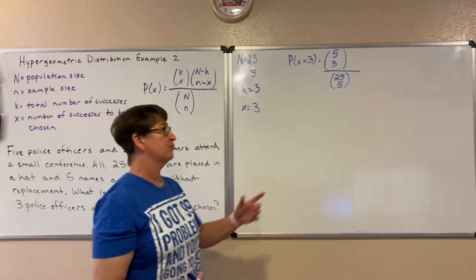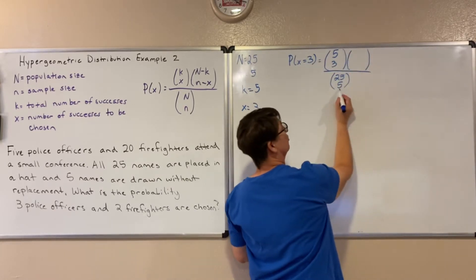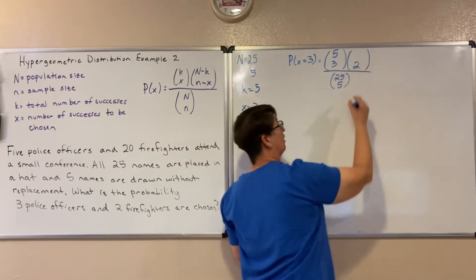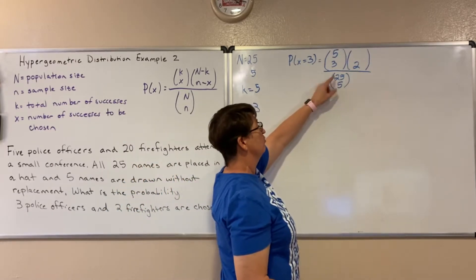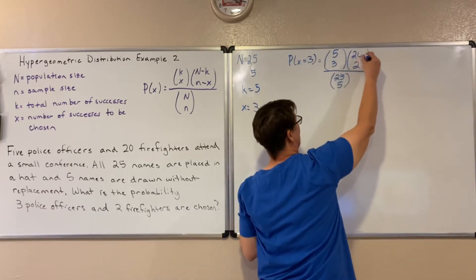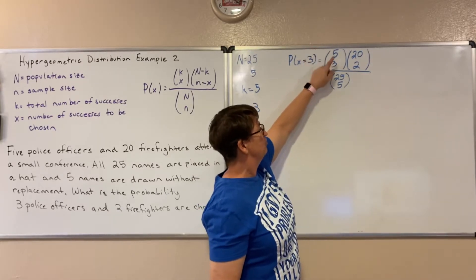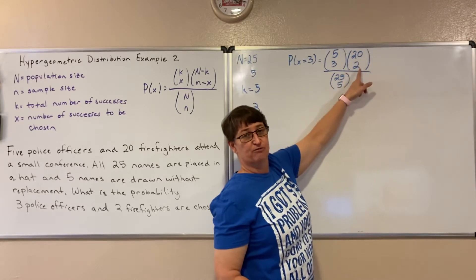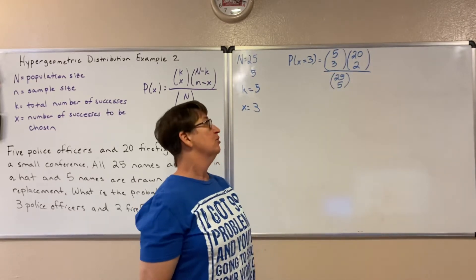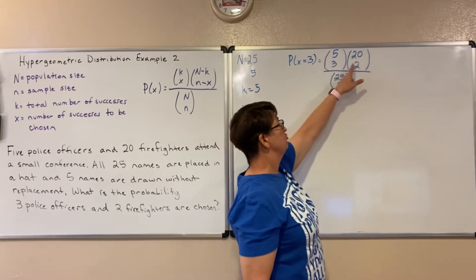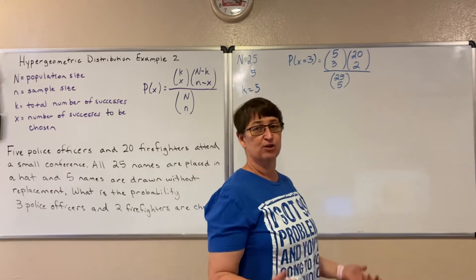Then we're choosing five names and we've only looked at three of them, so the other two are firefighters. Five minus three gives me two — I want to choose two firefighters. How many total firefighters did I have? Well 25 minus five gives me the 20 firefighters. So here's the total number of police officers and the police officers I'm choosing, the total number of firefighters and the number of firefighters we're choosing, and the population and sample. Notice we could have swapped these: 20 choose 2 times 5 choose 3, because multiplication is commutative — that's what I mean by you can make your success either one.